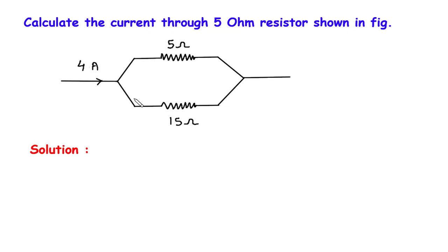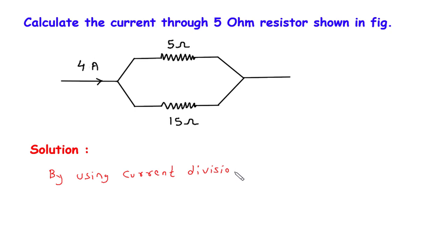For the solution, here we have to use the current division rule. Now according to the current division rule, let's say this current is I5 ohm, and we have to find this current.